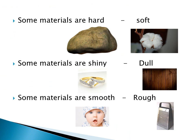Some materials are hard, like a rock. Some are soft, like cotton. Some are shiny, like a ring. Some are dull, like a piece of wood. Some are smooth — like a baby's skin, which is so smooth when you touch it. And some are rough — look at this picture, it is so rough it could hurt your hand.